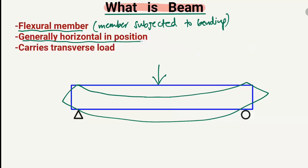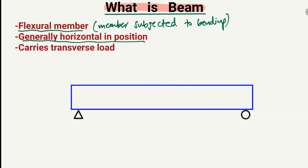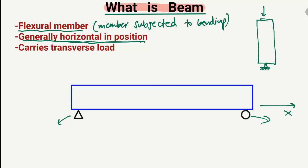The second characteristic is that a beam is generally horizontal in position. It is always laid horizontally on the supports — for example, on a hinge support and a roller support along the x-axis. It is not laid vertically. When a member is vertical and carries load in that direction, we deal with that member as a column, not a beam.